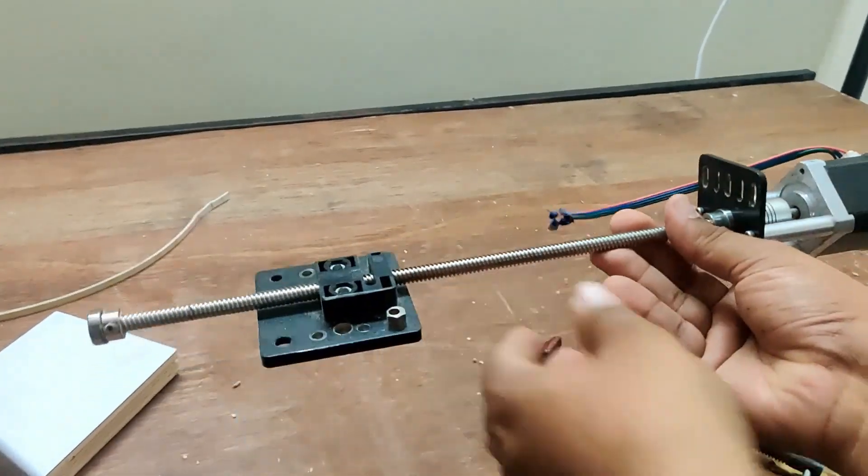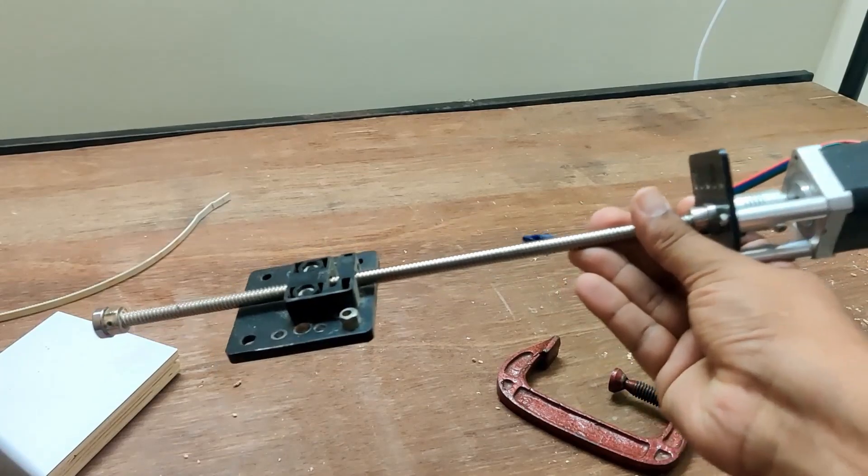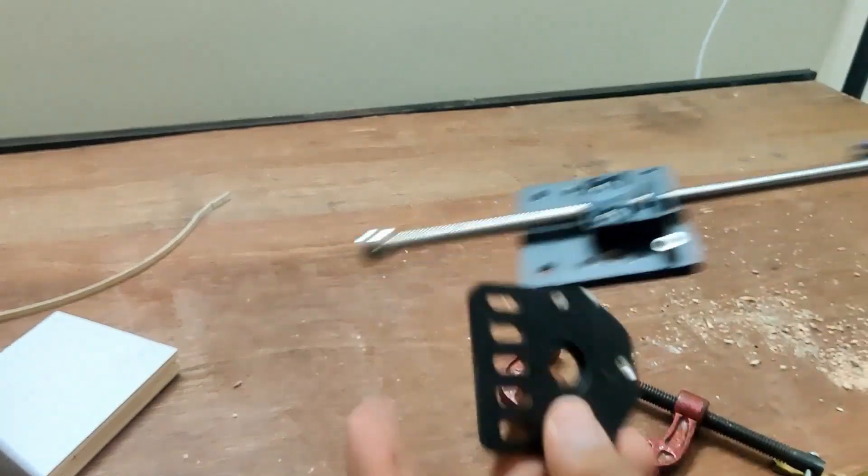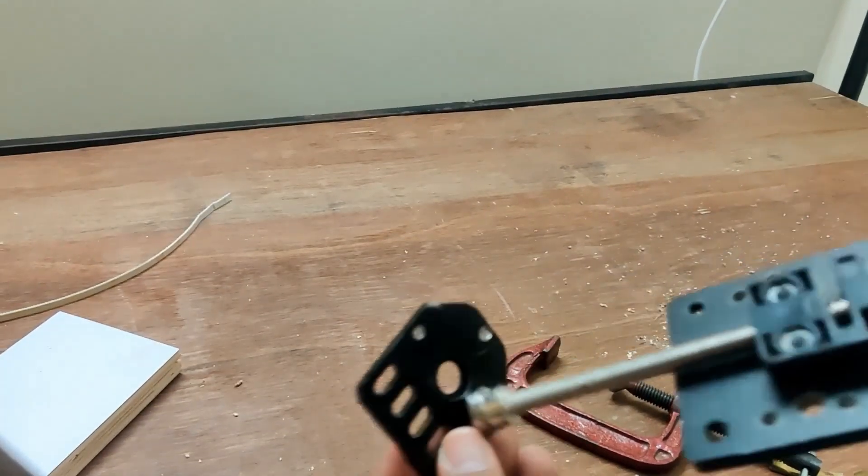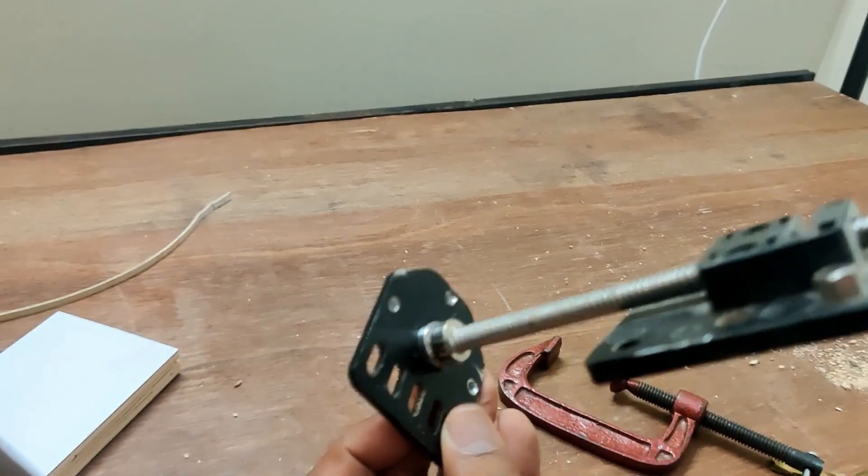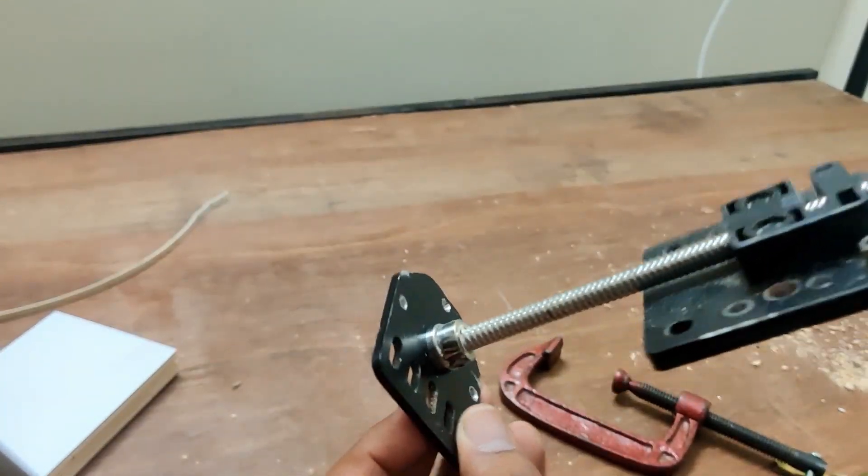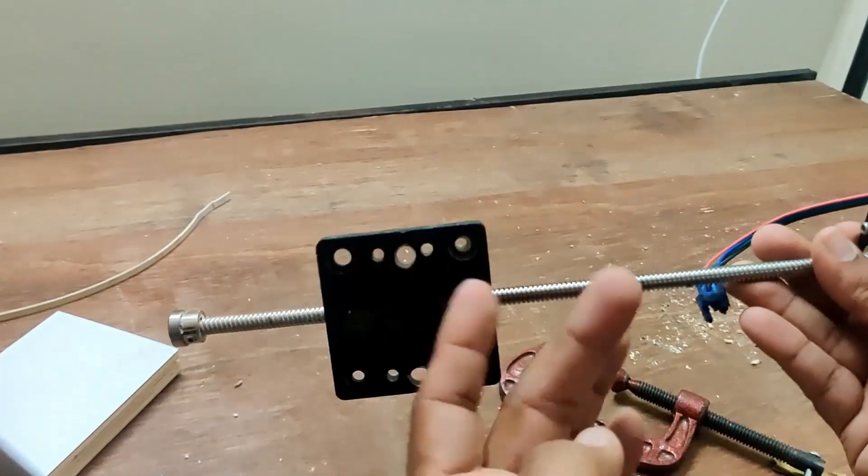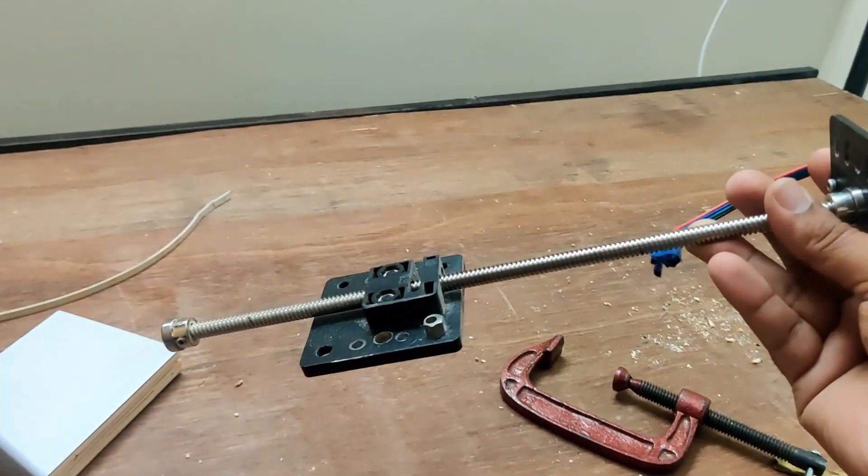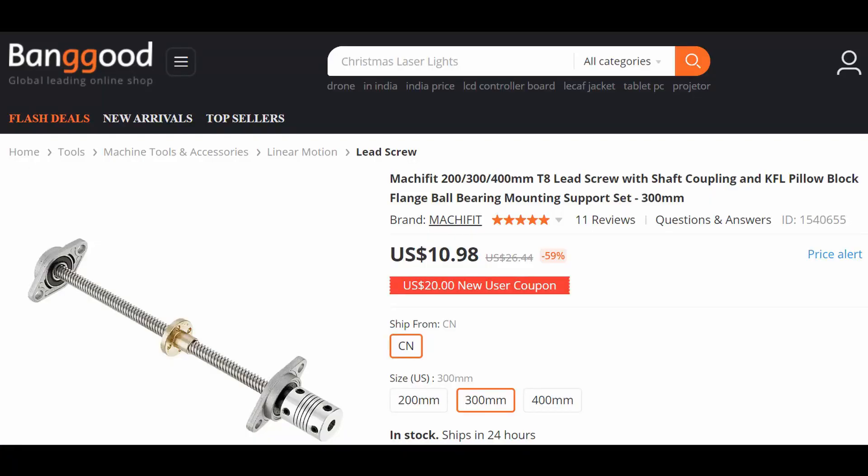For the lead screw setup, I'm using parts from a 3D printer. It's about 30mm and comes with metal pieces, bearing holder, and a delrin nut. If you don't have this, you can order online. It costs about $11 and comes with the lead screw, nut, bearing, bearing holder, and coupler for the motor.